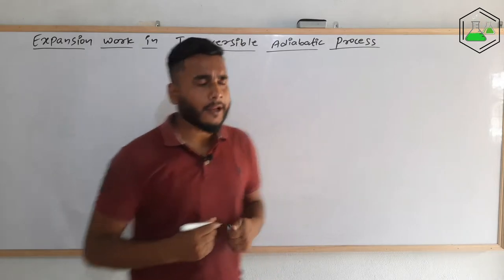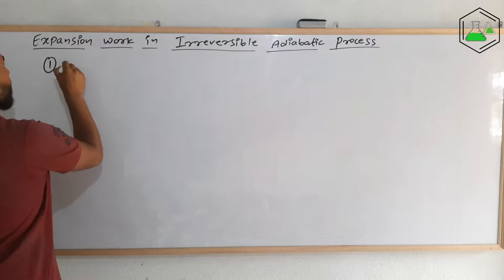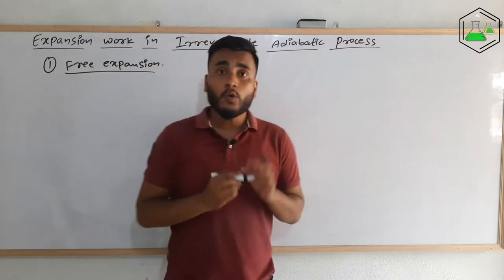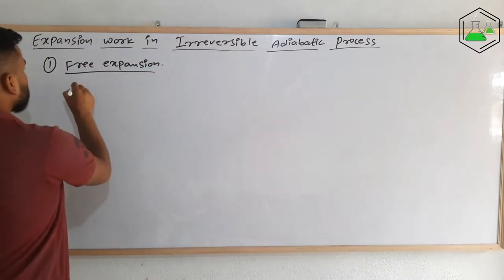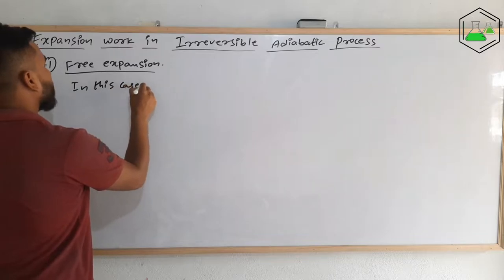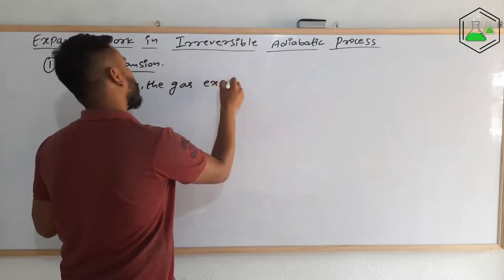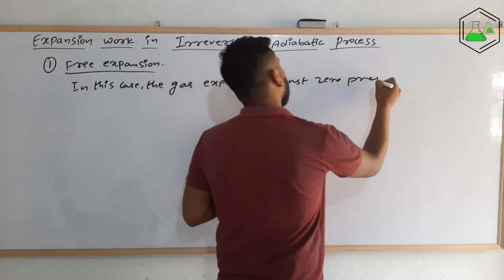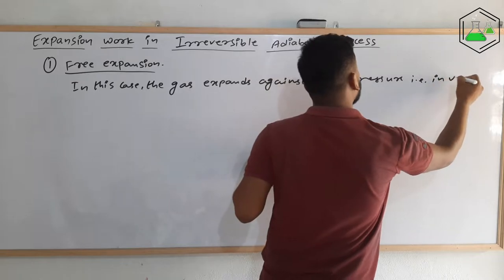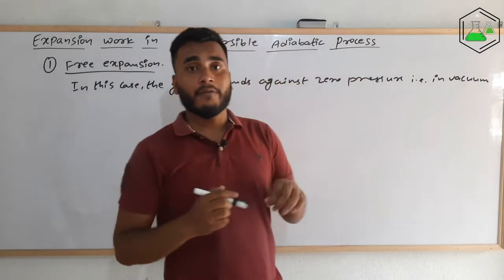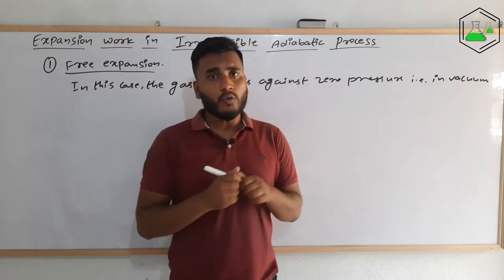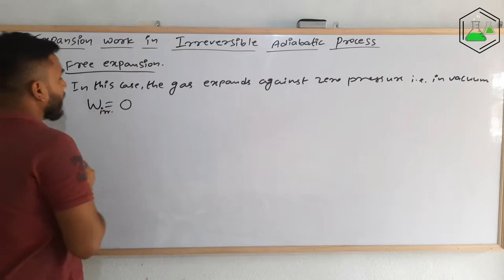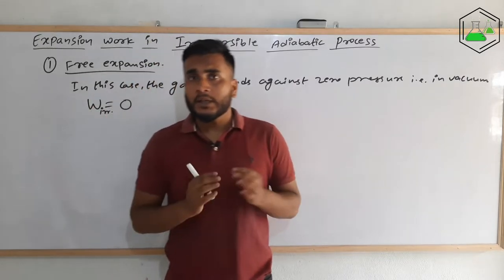In irreversible adiabatic process, two cases are possible. The first one is free expansion. In free expansion, the gas expands against zero pressure — that is, in vacuum. Since the gas is expanding in vacuum, it doesn't have to do any work. So in this case, the work done is equal to zero.